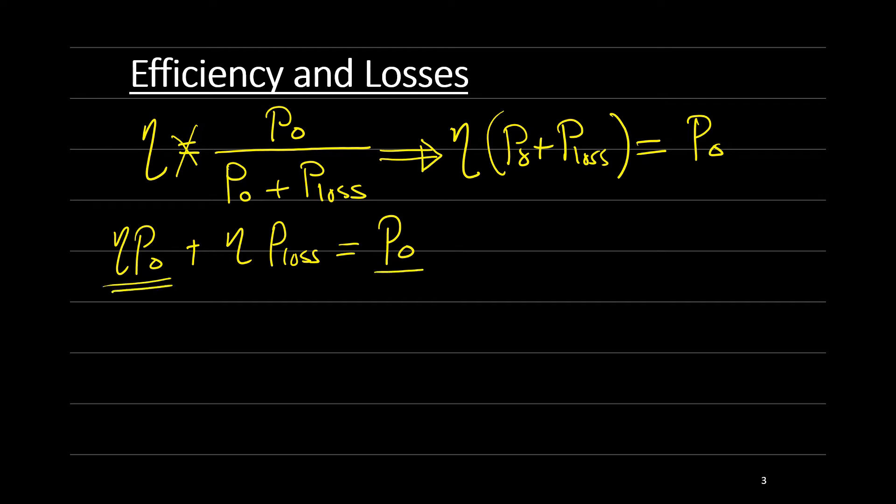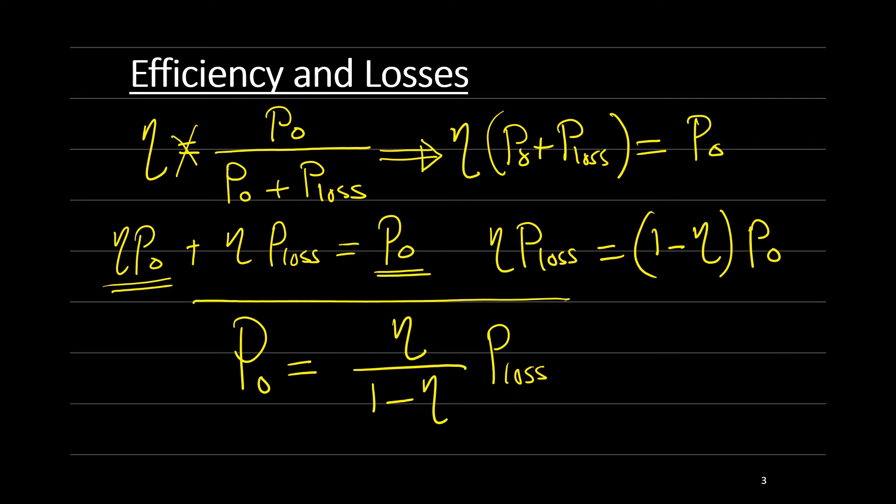Take these together. So here you'll get that 1 minus eta times P out is equal to eta times P losses. So calculate the output power with respect to the losses. You will find that the output power is equal to eta over 1 minus eta times P loss. So now we have the output power with respect to the power losses only.